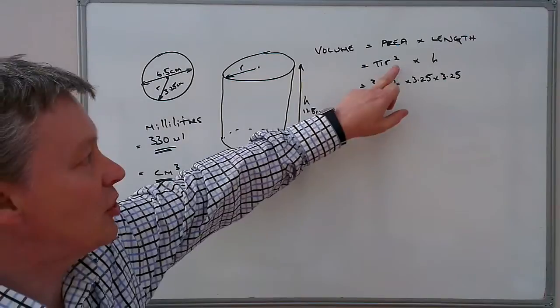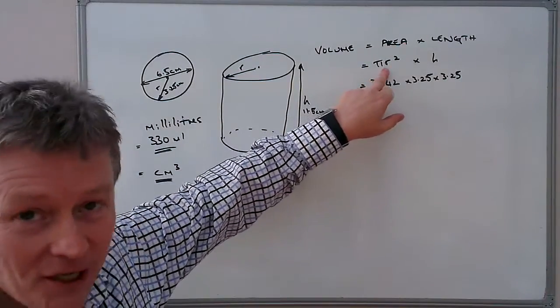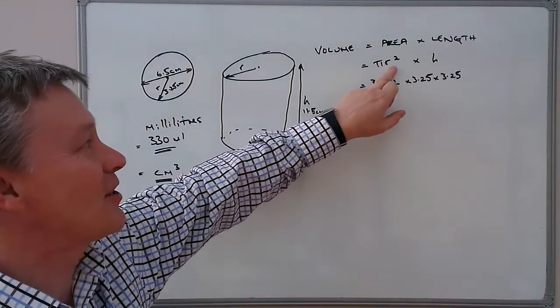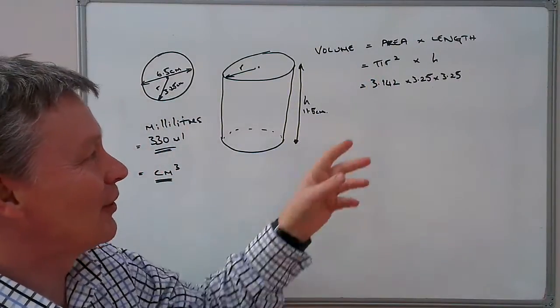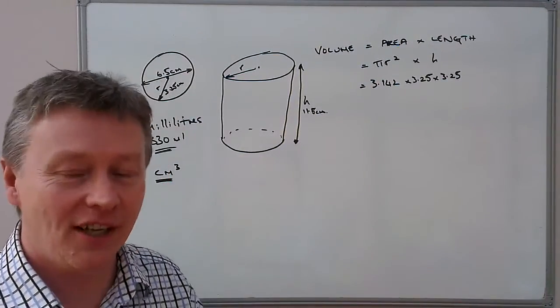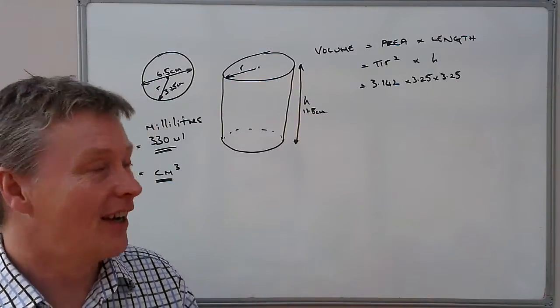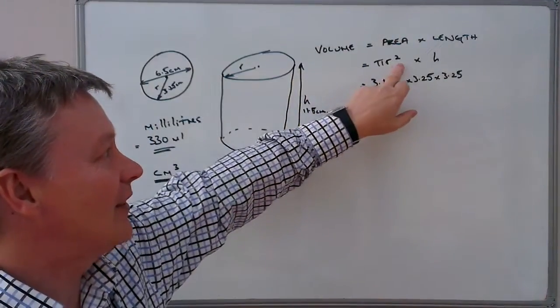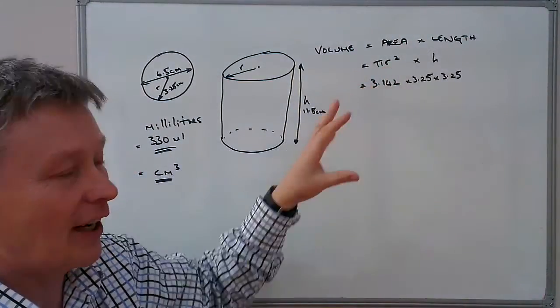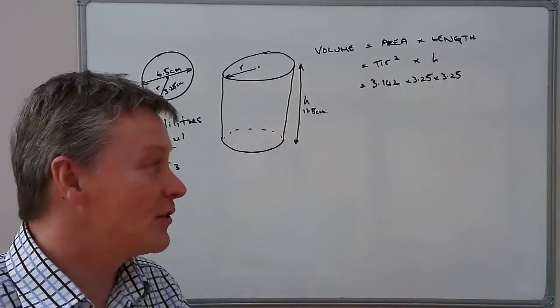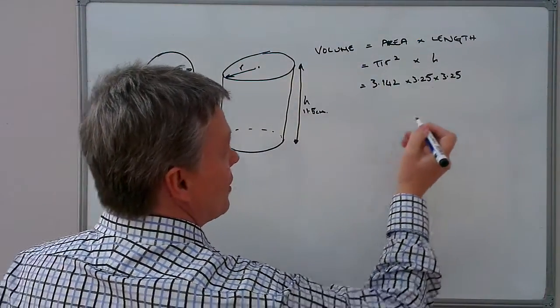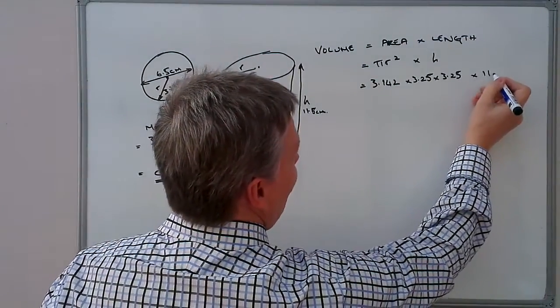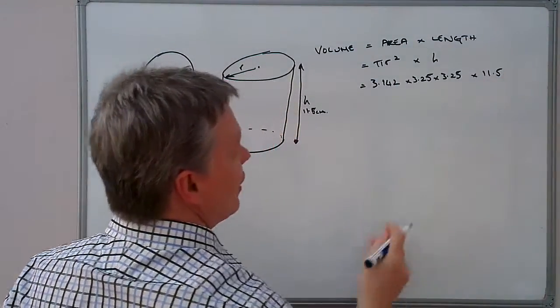It's very important that you do that because this is radius squared. So it's going to be 3.25 times 3.25. It's not 2 times the radius. It's the radius times the radius. If you have a look again at the how to calculate the volume of a cylinder video, that will give you that as well in the calculation and example that we used there. The other thing we're going to multiply by is the height, which is 11.5.